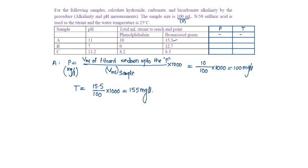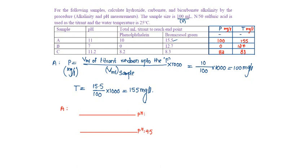Tabulating the values: for sample A, phenolphthalein alkalinity is 100 mg per litre and total alkalinity is 155 mg per litre. Phenolphthalein alkalinity is 0 for another sample, total is 127, and for another it is 82 and 83. Taking pH values in the pH range from 4.5 to 8.2.